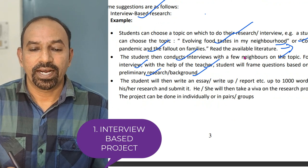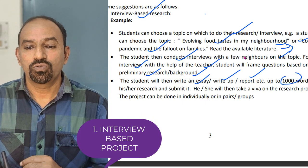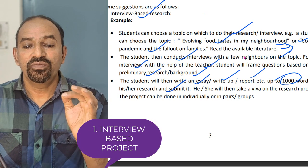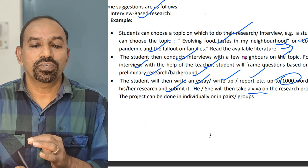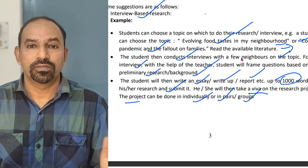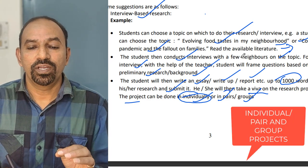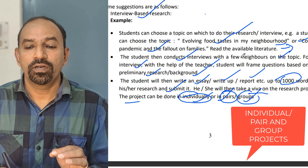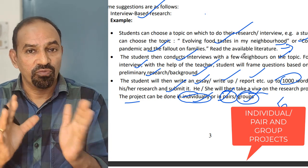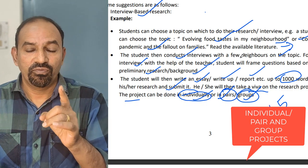Students will then write an essay, write-up, or report of up to 1000 words and submit it. The teacher will take a viva on the research project. The project can be done individually, in pairs, or in groups. Five marks are for the project work and five marks for the viva — these are the two divisions of marks for your final term.